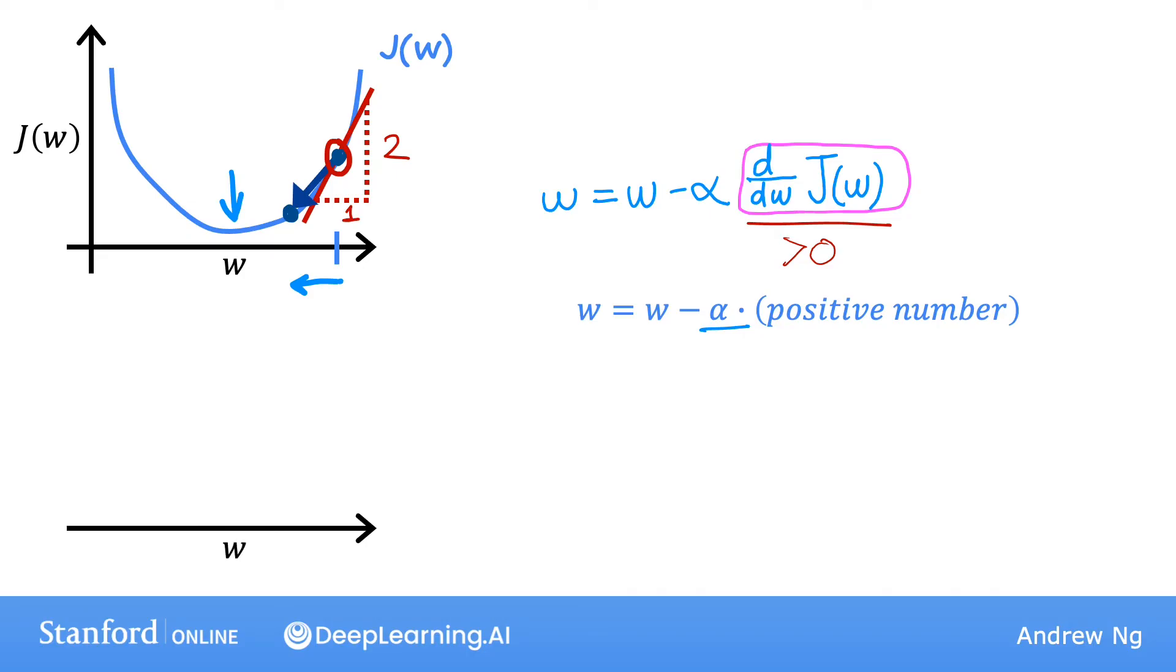Now let's look at another example. Let's take the same function J(w) as above, and now let's say you initialize gradient descent at a different location, by choosing a starting value for w that's over here on the left. So that's this point of the function J.